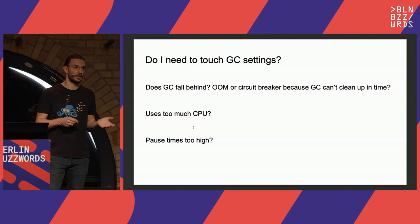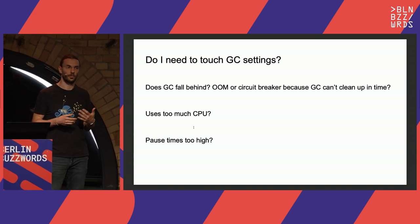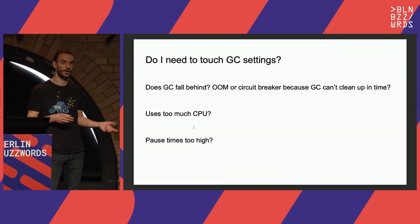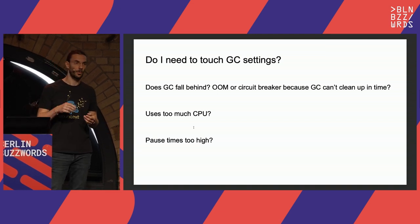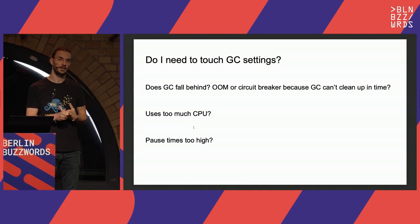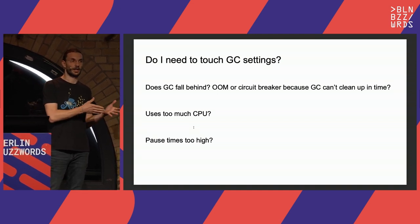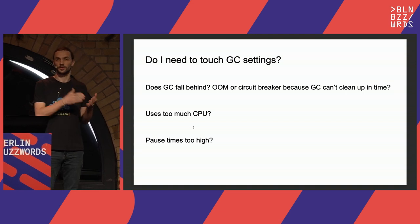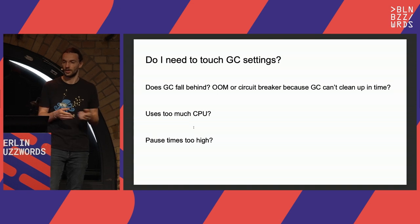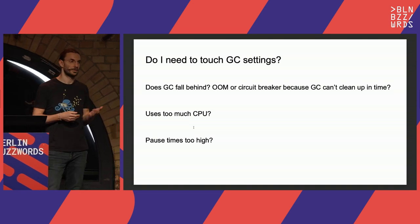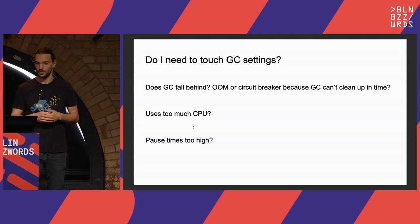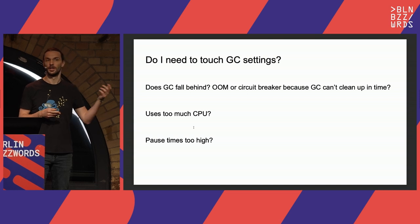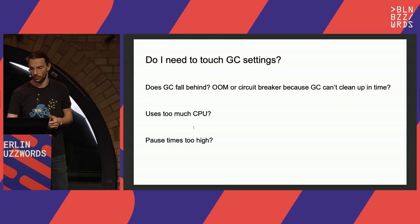When it comes to GC tuning, there are three problems we can solve: first and most frequent — GC falls behind, meaning we're allocating more memory than we can collect in time and eventually the heap runs out. Second — overhead is too high, using too much CPU. Third — GC pause times interfere with core query latency.